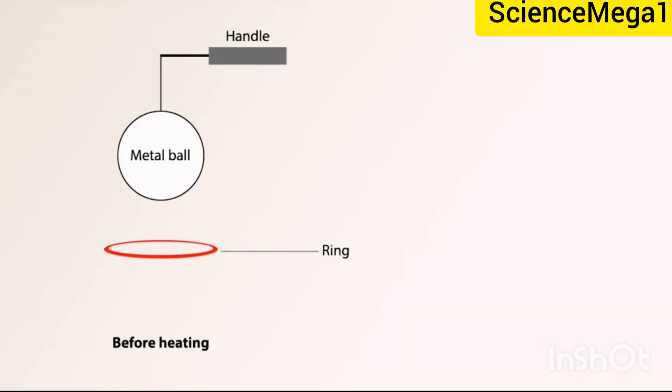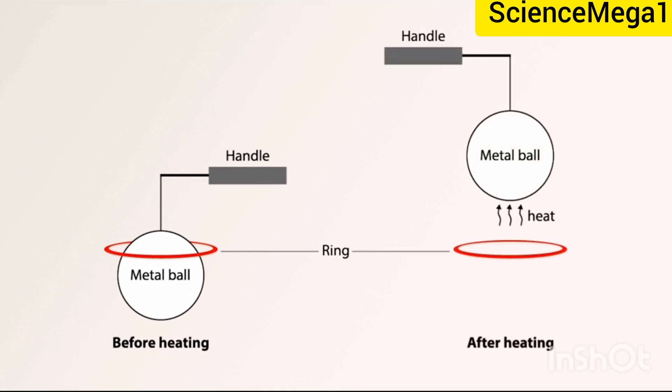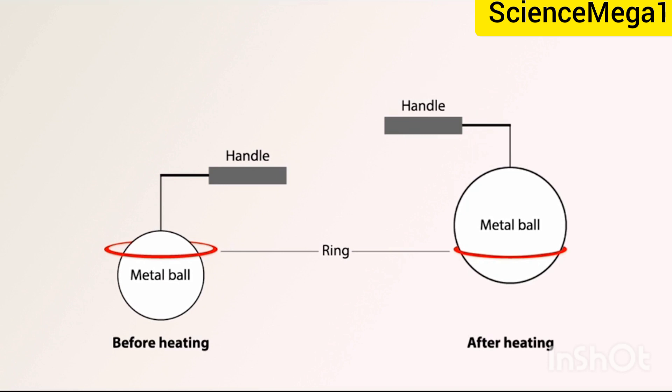The diagram on your screen shows a metal ring and ball before heating. Now, before heating the ball, the ball can completely pass through the ring. When the ball is heated for some time and then placed in the ring, it could no longer pass through the ring as shown on your screen.